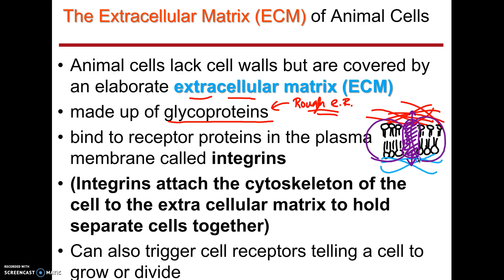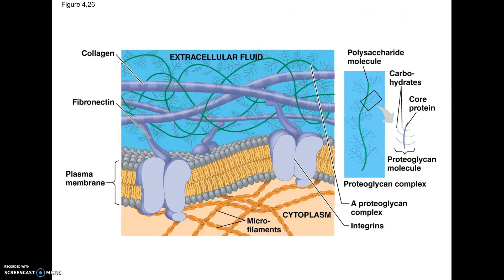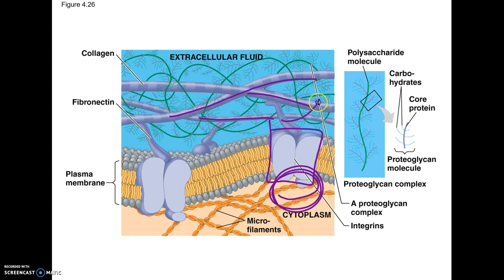Remember, the phospholipid bilayer is sort of liquidy. What's preventing it from just moving, changing shape, and sliding all over the place? That's going to be the integrins — they hold the outside and inside linked together and maintain cell and tissue shapes. The feathery things are the polysaccharides, these are the proteins of the extracellular matrix, and this is an integrin hooked to the cytoskeleton inside and the extracellular matrix outside. Even though cells don't have sturdy cell walls, they are anchored in place and anchored to one another.